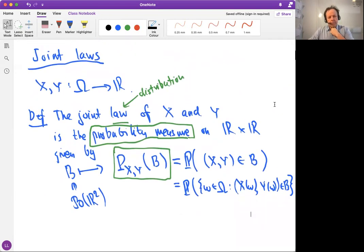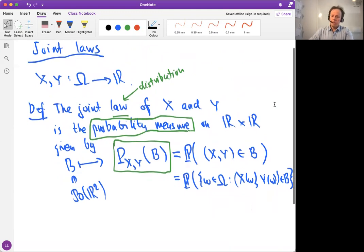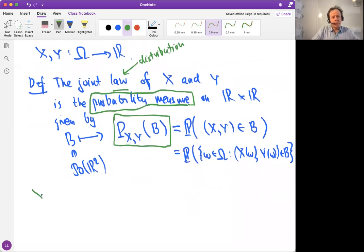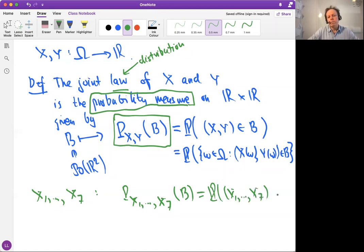What else is there to say about joint laws? Maybe it's fair to say that we might have several random variables. Let's have seven random variables now. The joint law here is that we take, think about these random variables as a random vector, and then the joint law is the probability that this seven-variate random vector belongs to a Borel set B, for B being a Borel set in the seven-dimensional Euclidean space.